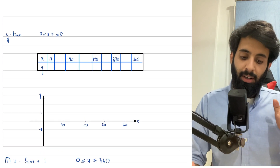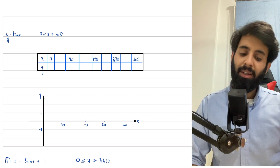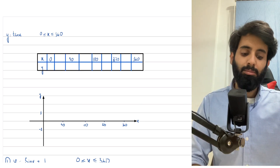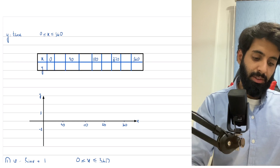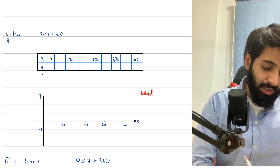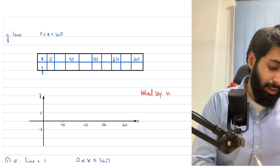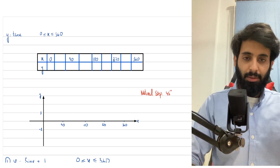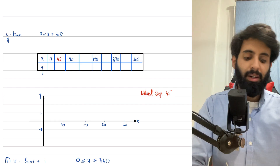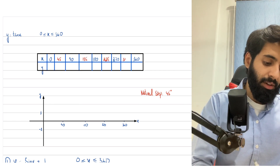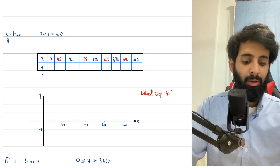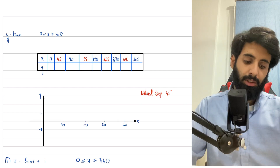With tan, things get slightly more complicated. Here we have y equals tan x, and we're asked to sketch it from 0 to 360. You may notice I've left some spaces in between. When you're making the graph of tan, the natural step you take is basically 45 degrees — so you plug in values after every 45 degree interval. We start at zero, and the next values we plug in are 45, 90, 135, 225, 315, and 360. I'm going to do that in my calculator, and there's something important I want to point out, so pay close attention.